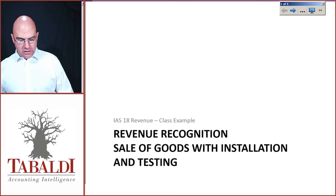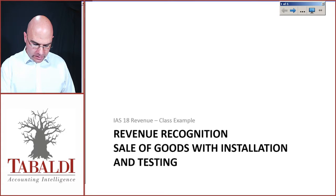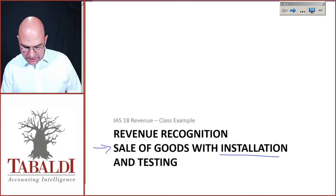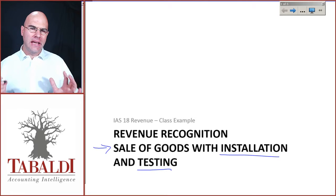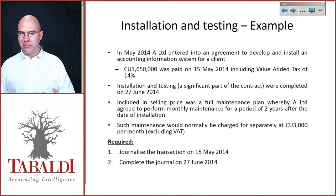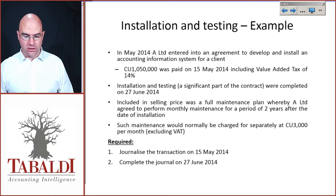Welcome back. We're going to do some class examples, starting with revenue recognition for the sale of goods with installation and testing — a sub-heading under goods shipped subject to conditions. Remember the principle: you will only recognize revenue once the conditions are met. Let's go through an example.